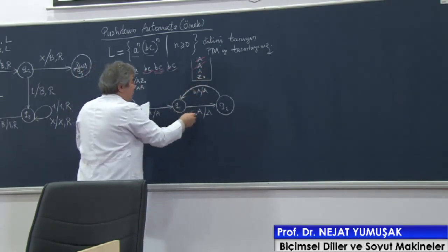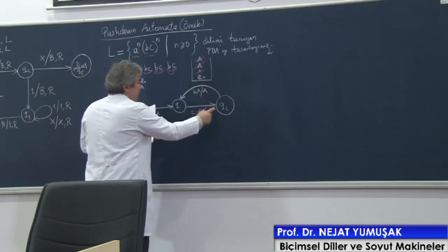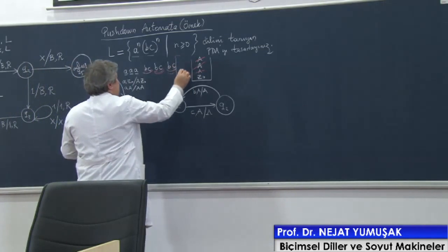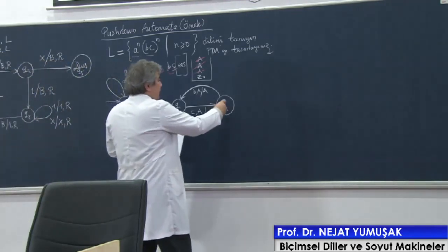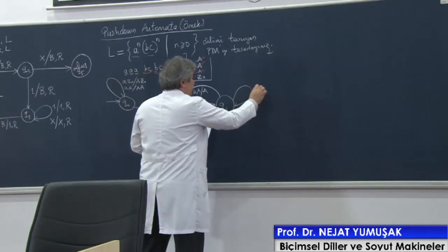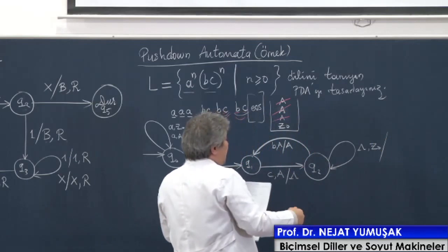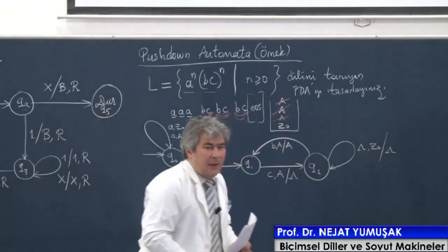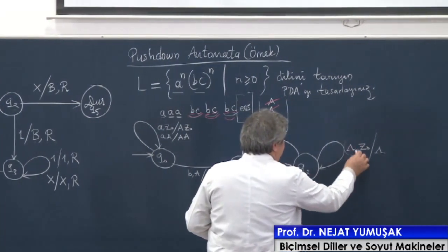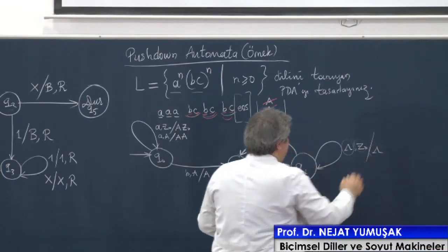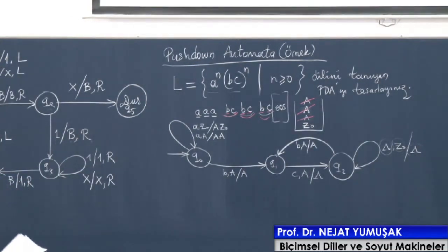Geri dönüyorum. Ama C okuduğumda yığıttan bir A çıkar. Ne okuduk arkadaşlar? End of string — boşluk okuduk. Q2 durumundayım. Boşluk okudum, bu arada yığıtta ne olabilir? Z0 olabilir. Diyorum ki onu da çıkar. Hatırladınız mı? Boş yığıtla tanıma demiştik. Okunacak simge kalmadı, yığıtta boş — en son Z0'ı çıkardım. Yığıtta boş. İşte bizim PDA makinemiz budur.